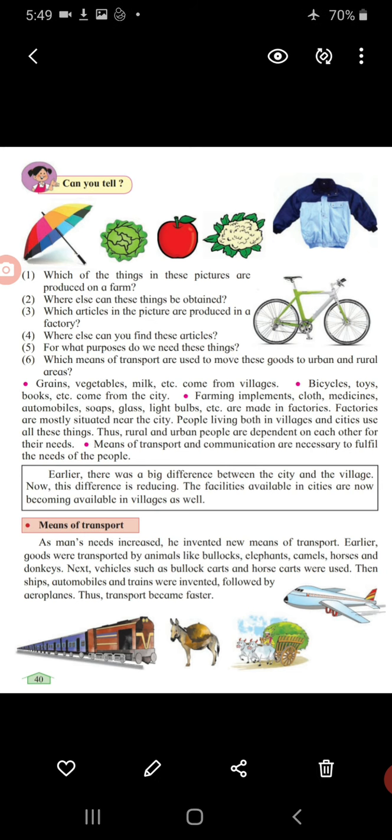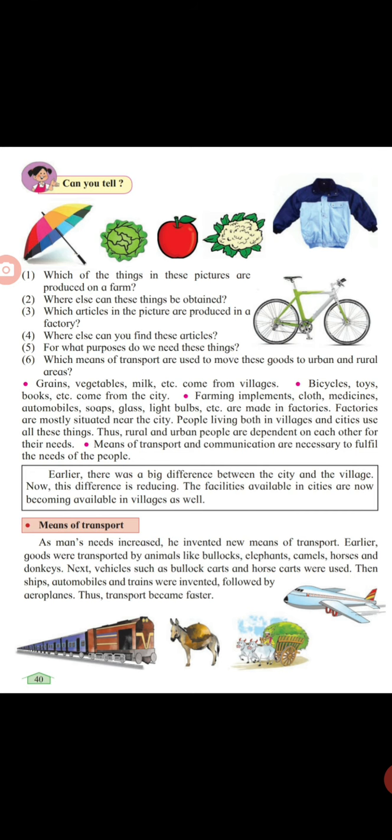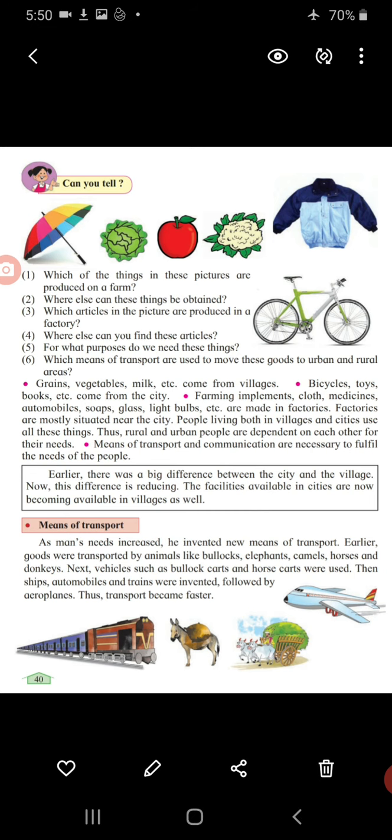Fifth: for what purpose do we need these things? We use an umbrella during the rainy season. Cabbage and apple are used for eating. A jacket is worn when it is cold. A bicycle is used for riding.